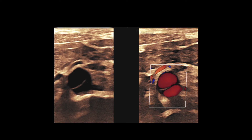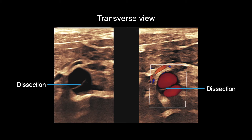Here is an example of what a dissection looks like on an ultrasound. You can see the same image in black and white on the left and in color on the right. The dissection is indicated by this bright line running through the lumen. This is best seen in transverse view.